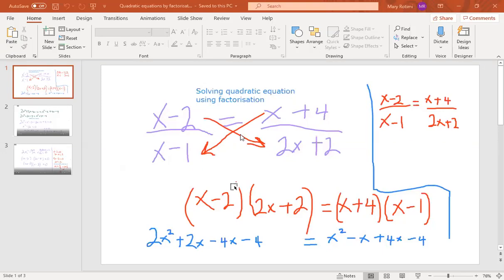So the first thing you have to do is do a cross multiplication like I've done here. So you have to multiply (x-2) by (2x+2), so (x-2) times (2x+2). So it's the same thing as putting both of them in brackets. The same thing on the other side where you have to do (x+4) times (x-1). You put it in brackets.